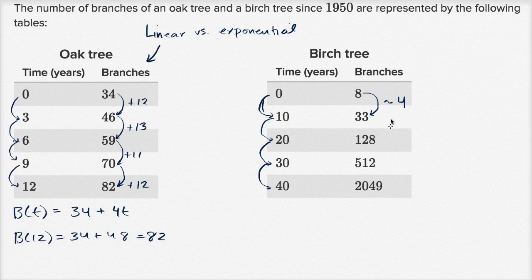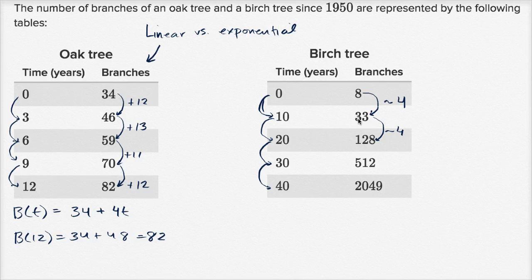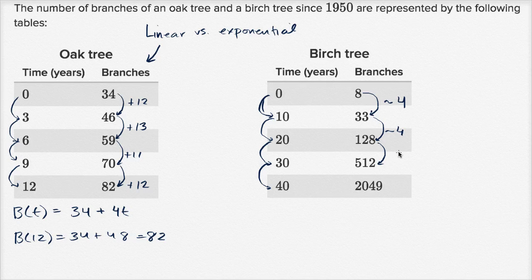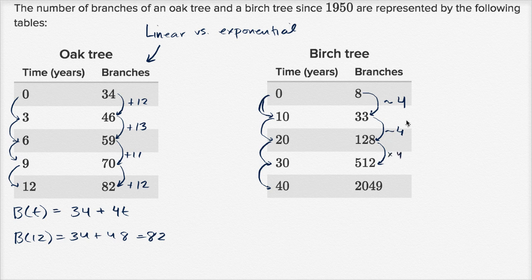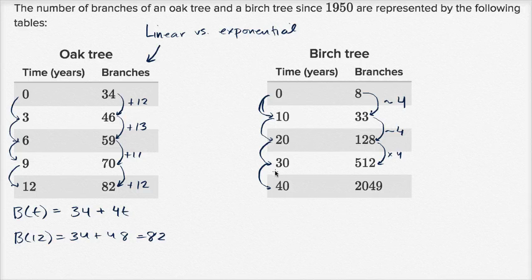33 to 128, well that's going to be a little bit less than four, but it's approximately four. 33 times four would be 132, so we're close. 128 to 512, that's exactly four, right? That's exactly 120 times four is 480 plus 32, that is exactly four. So it looks like we keep multiplying by four every 10 years that go by.